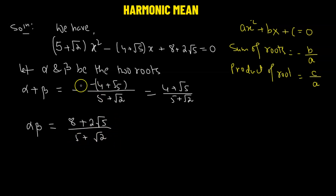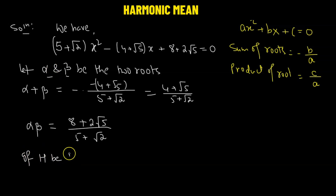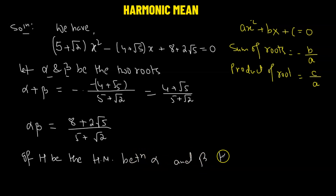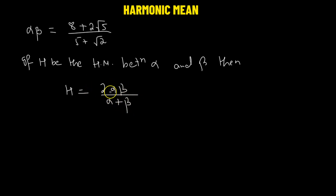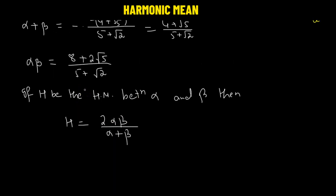Our goal is to find the harmonic mean of the two roots, alpha and beta. By definition, if H is the harmonic mean between two numbers alpha and beta, then H is given by the formula: H = 2αβ divided by (α + β). Since we now have the values of both αβ and α + β, we can easily find the harmonic mean.